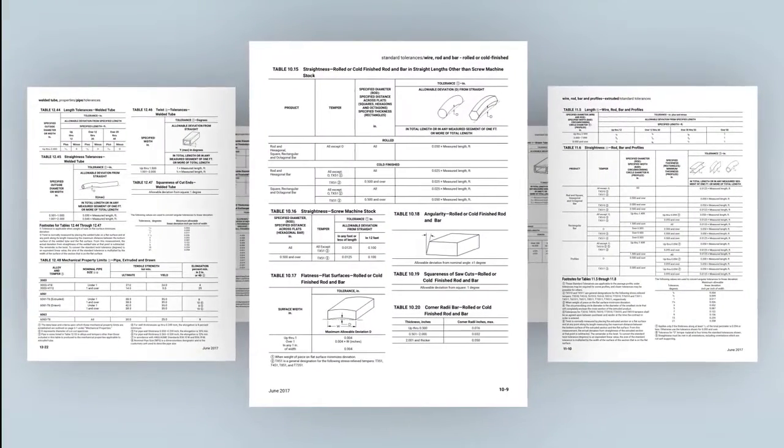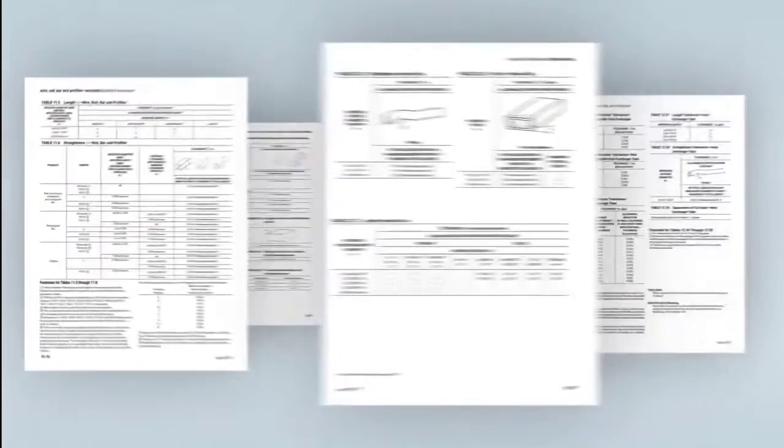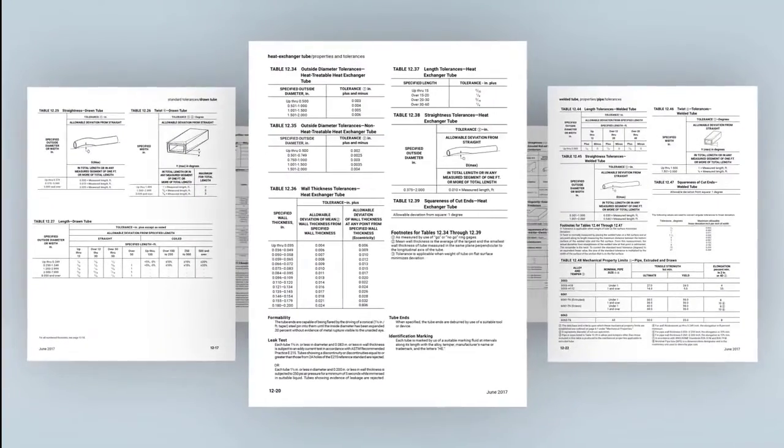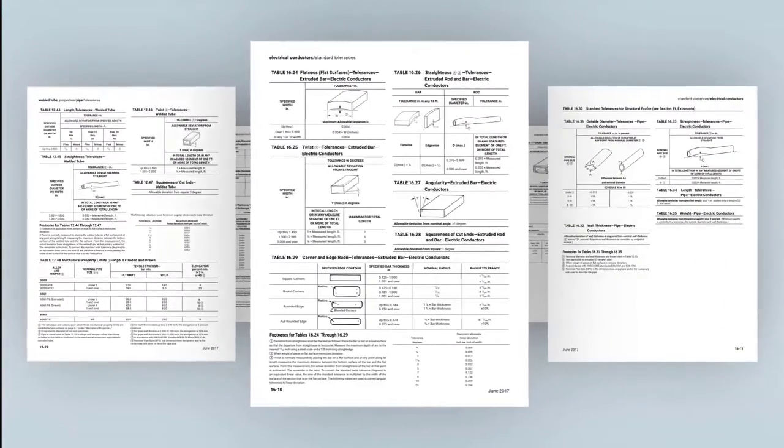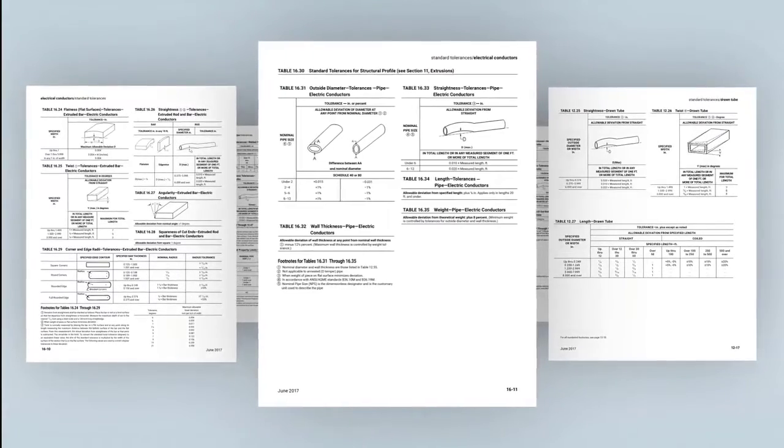There are different tables for different product forms such as pipe, tube, extruded, or cold-finished rod, so you'll need to know more about the product to determine what table applies. Different products have different straightness tolerance limits. However, all tables use the same methods to measure straightness and determine applicable straightness tolerances.